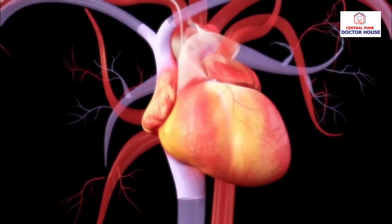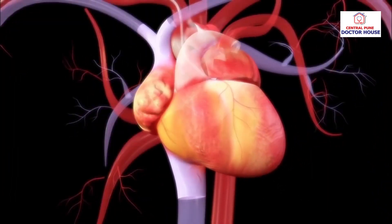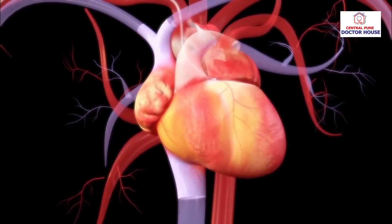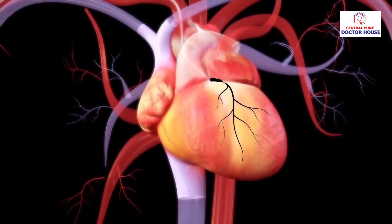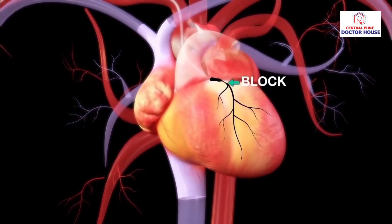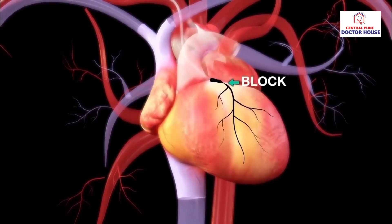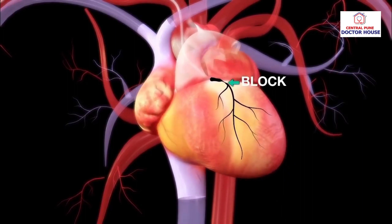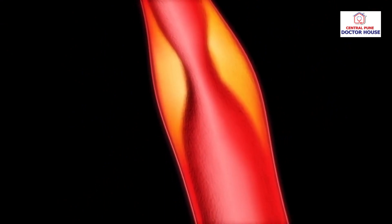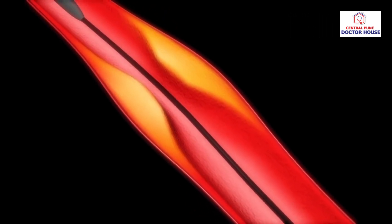The guide wire is removed and the tip of the catheter is positioned to enter the coronary artery. A special dye is injected, which allows the fluoroscope to take X-ray images of the arterial interiors, helping to identify the position of the blockage. This imaging procedure is called an angiogram.